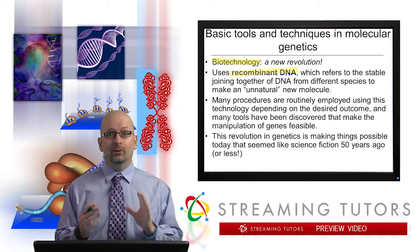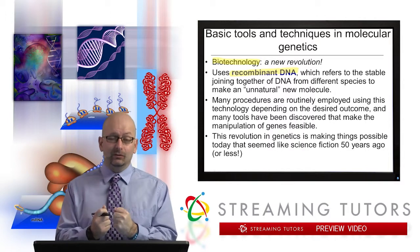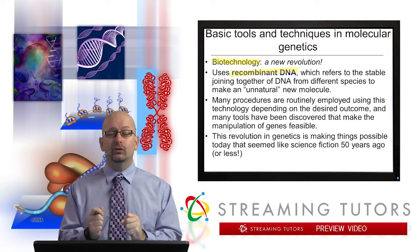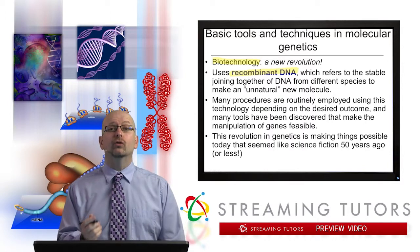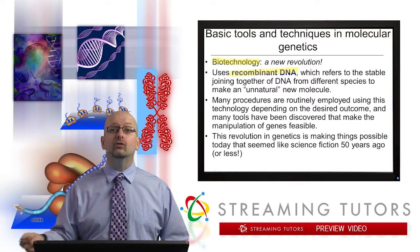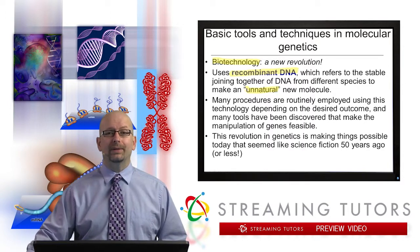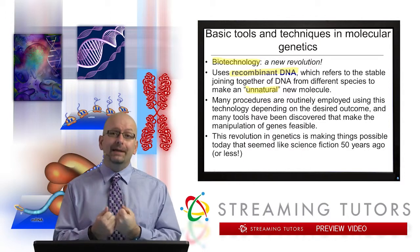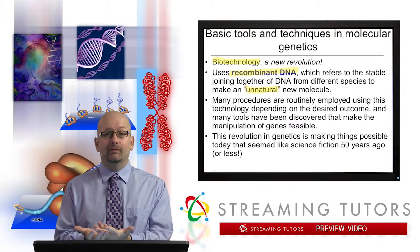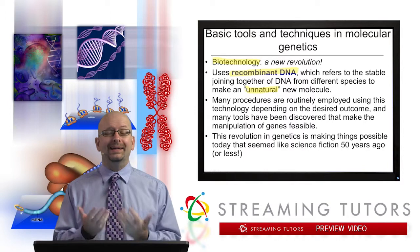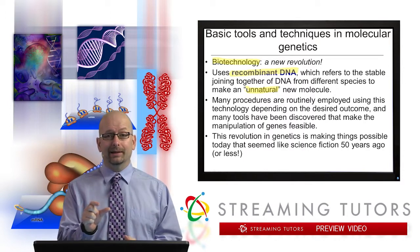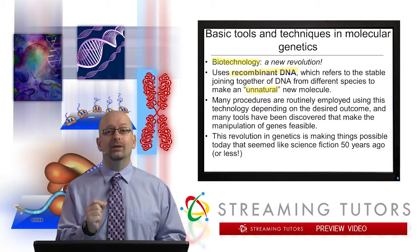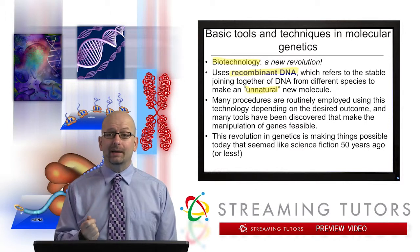Recombinant DNA — we've already heard a lot about recombination, the general idea of making new combinations of things. This means something similar, but it's specifically different. This use of the term recombinant DNA refers to the stable joining together of DNA from different species to make what I refer to here as an unnatural new molecule. Certainly in nature, you wouldn't find an E. coli bacterium with a human insulin gene sitting in the middle of it — but that would be an example of a bacterial genome that had a human gene in it, or a mouse genome that had a human gene in it. That molecule would be a recombinant DNA molecule that we have created.